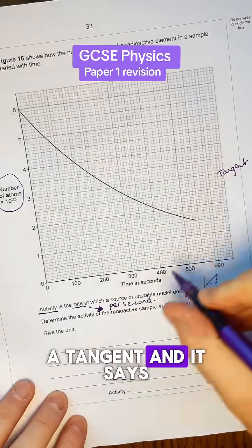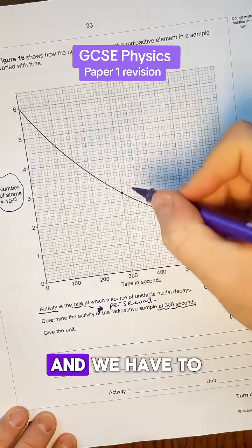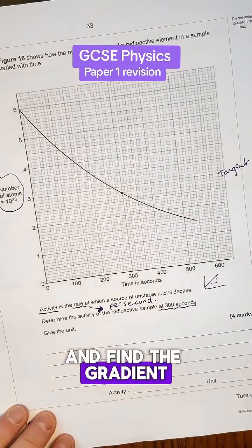So I'm going to draw a tangent and it says determine the activity at 300 seconds. So let me draw a dot at 300 seconds and we have to draw a tangent on and find the gradient of that tangent.